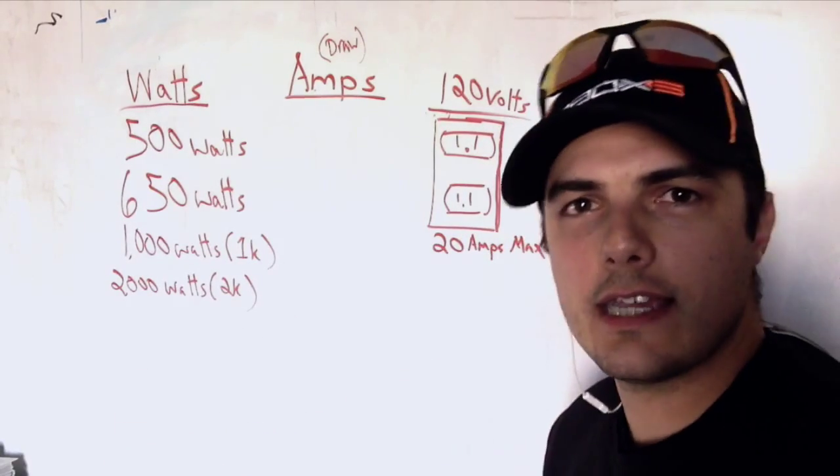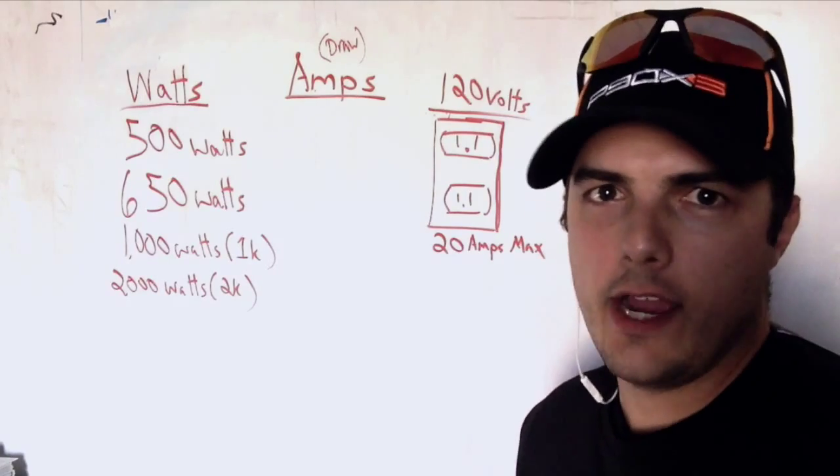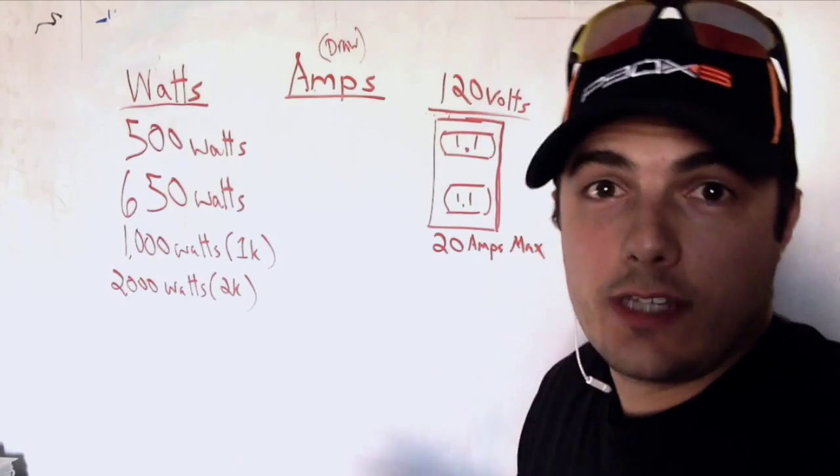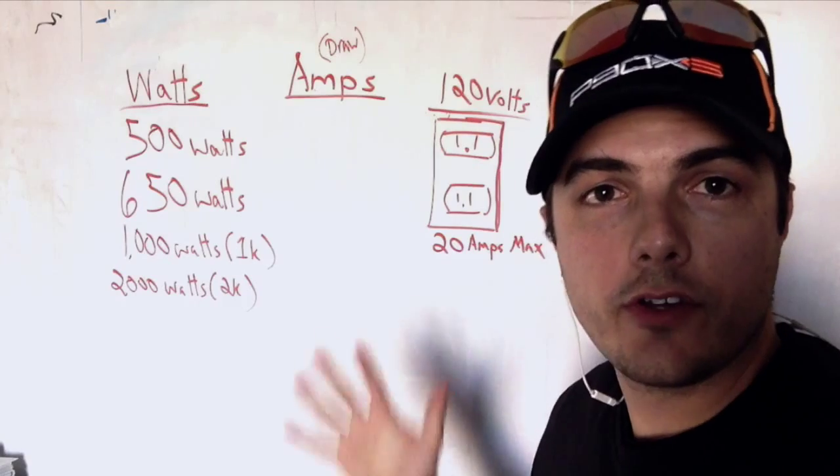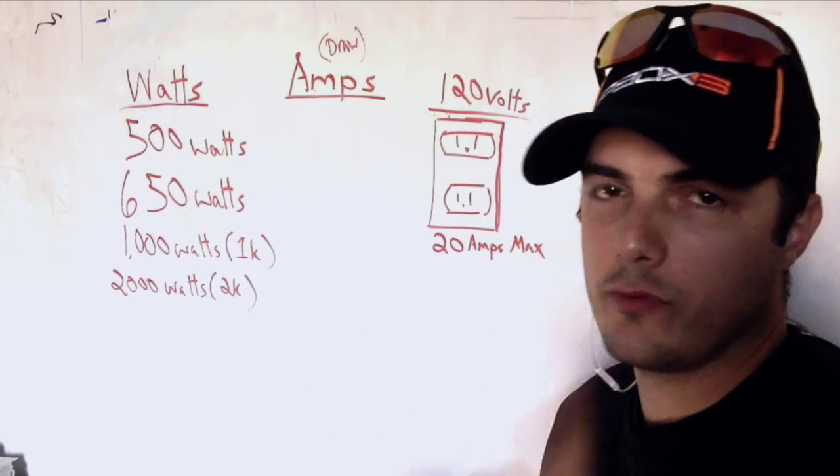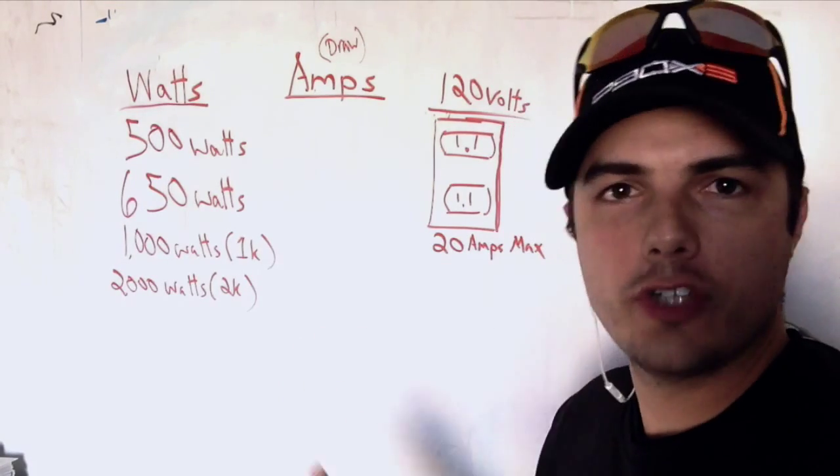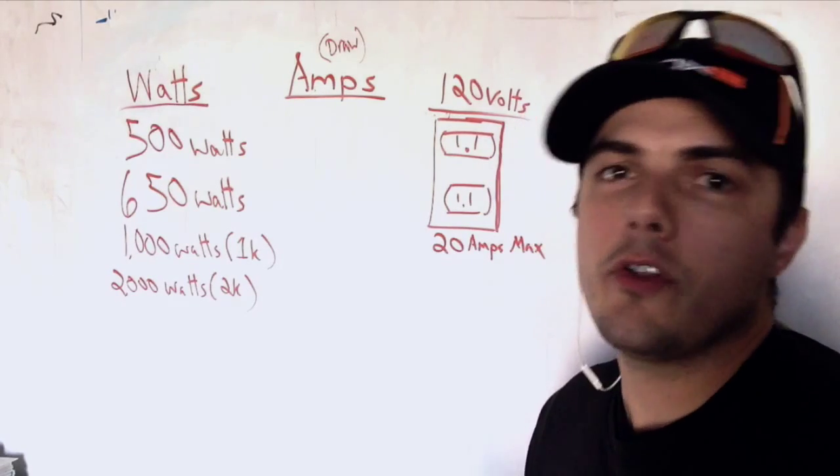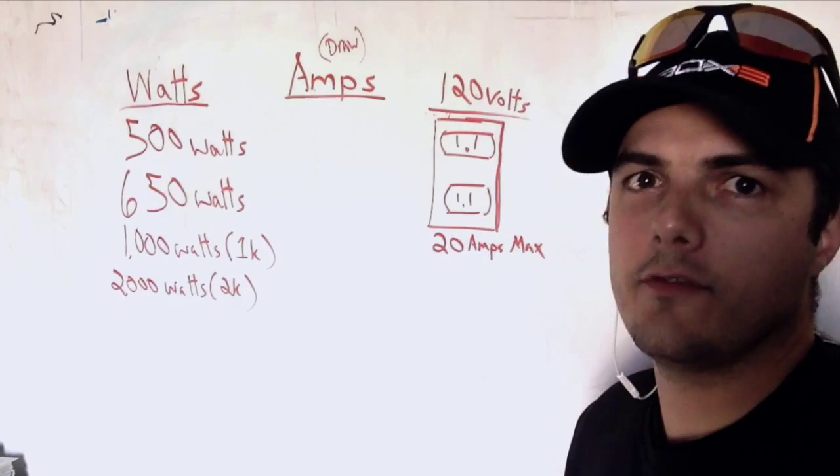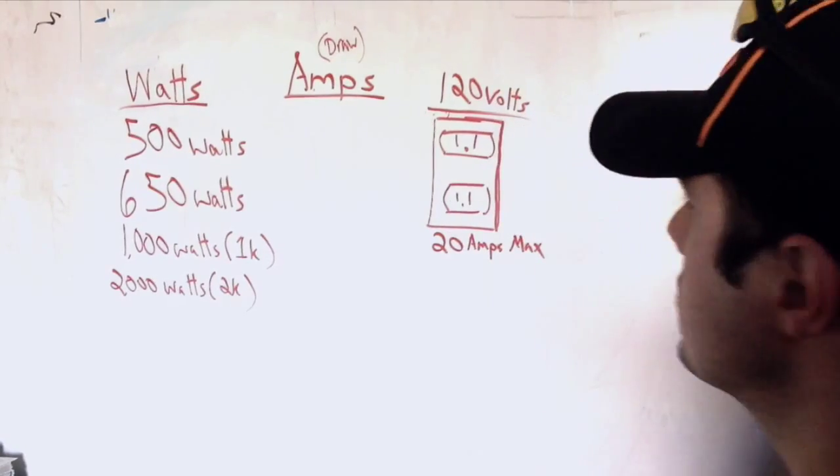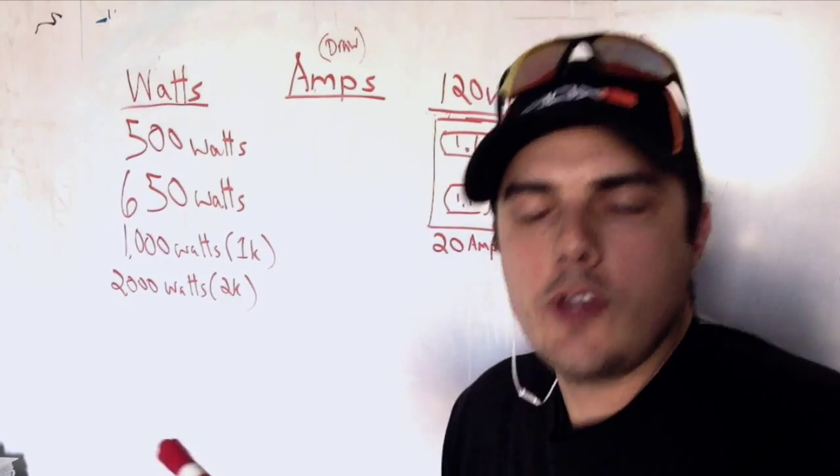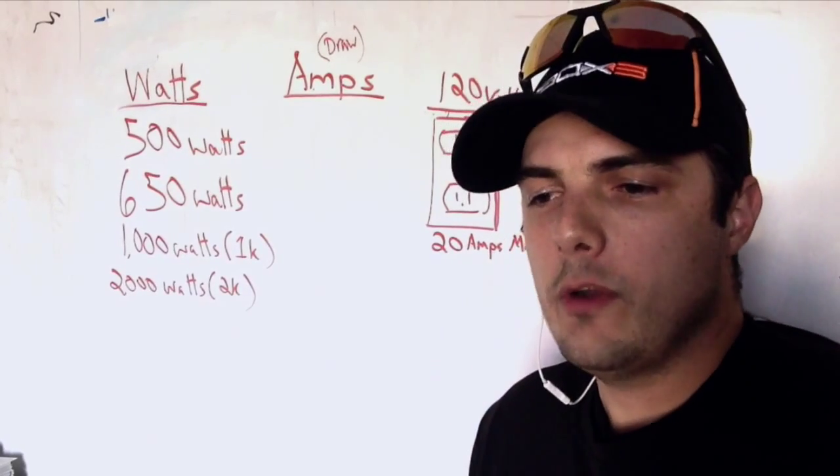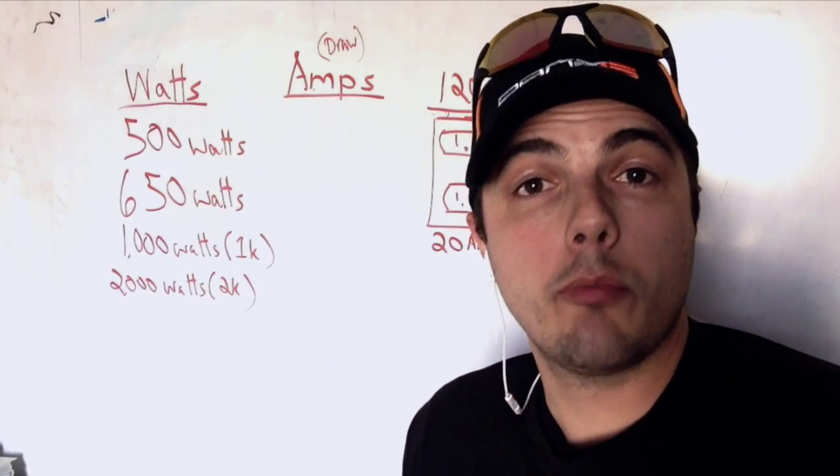This is going to be just good enough to keep us safe on set without burning things down or getting fired or making people mad, because a lot of things could happen if you overload these circuits on set. You can start a fire, you can trip breakers, you can ruin generators which stops production and makes people who are paying you very mad. We want to be careful about how much of a load we're putting on the circuits we're working with.